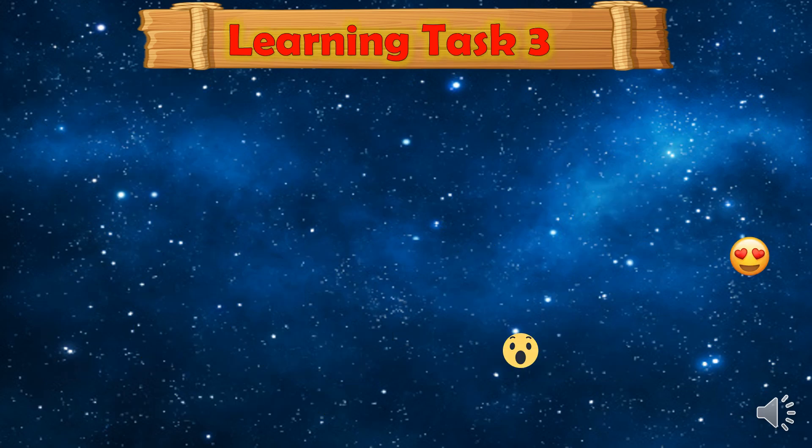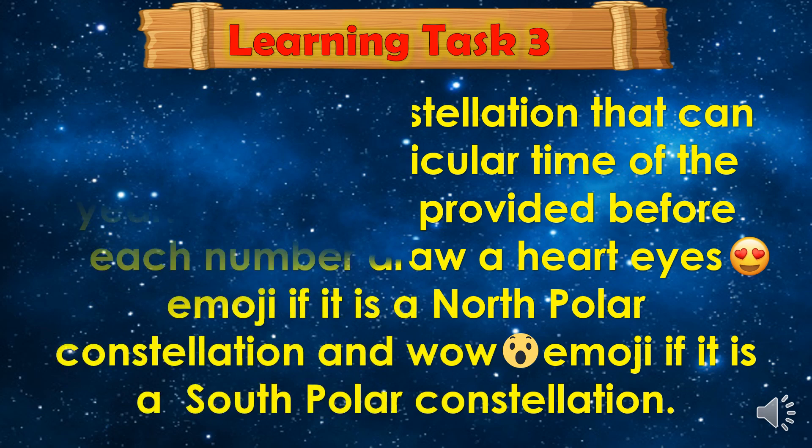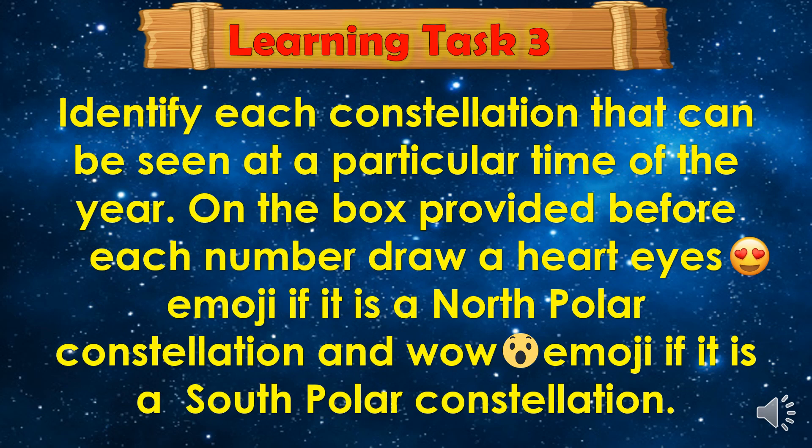For Learning Task 3, identify each constellation that can be seen at a particular time of the year. On the box provided before each number, draw a heart-eyes emoji if it is a north polar constellation, and a wow emoji if it is a south polar constellation.